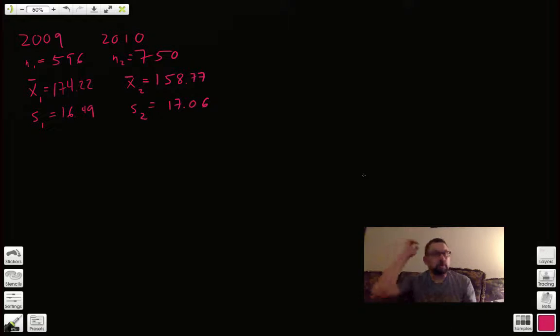So, here is our information. For 2009, we have an n1 of 596. That was the total sample size from that first year. And then 2010, 750. And we're doing a confidence interval. So, just like we do with tests, confidence intervals, same thing. Both were randomly selected.